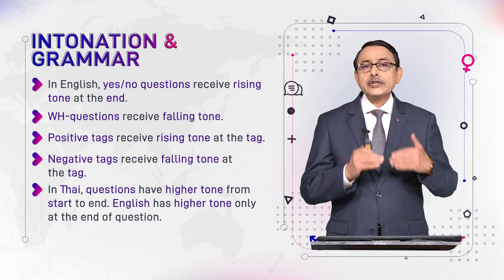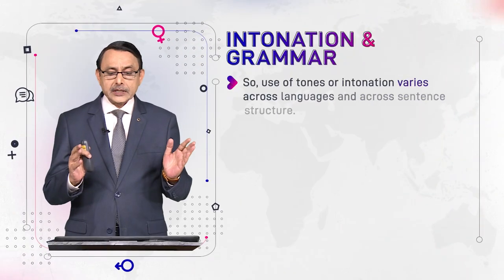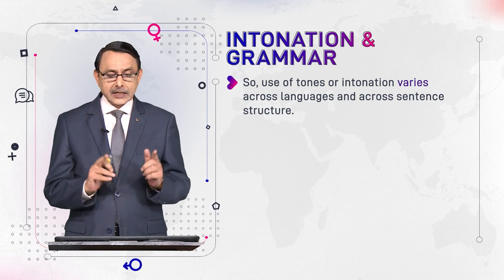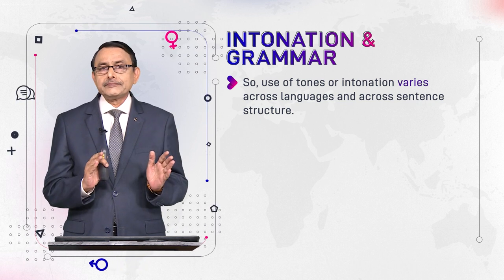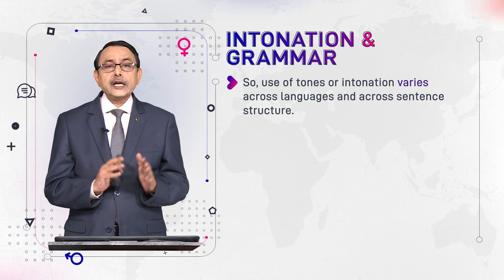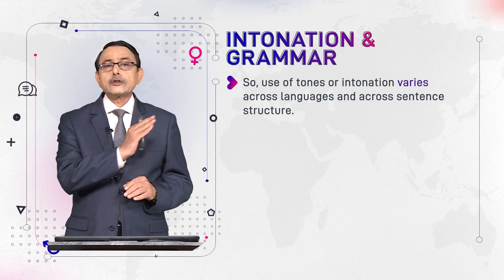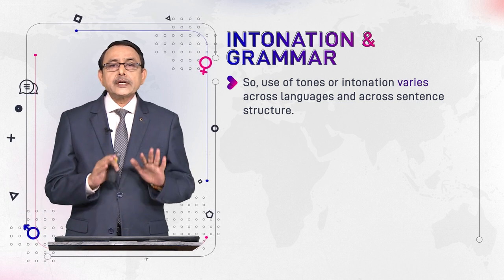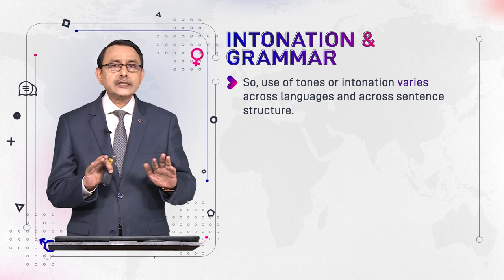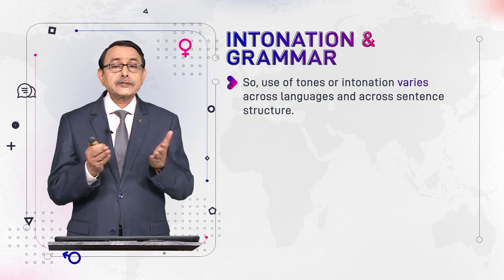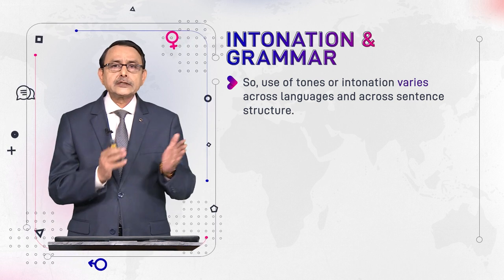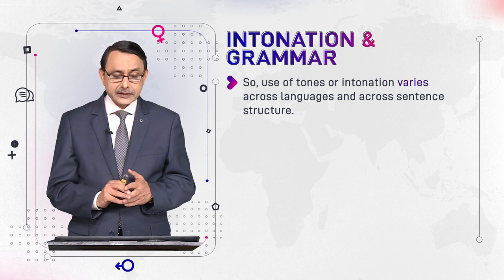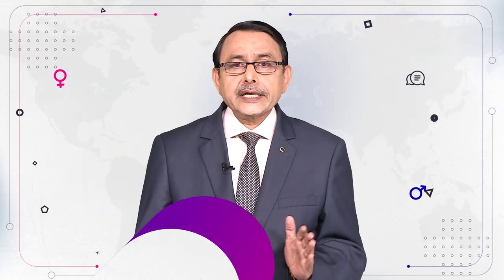From these points we derive two important conclusions. First, the use of tones — that is, intonation — varies across languages. As we have seen comparing Thai and English, they differ in their use of tone. Second, intonation varies across sentence structure: the type of sentence will take a different intonation pattern.